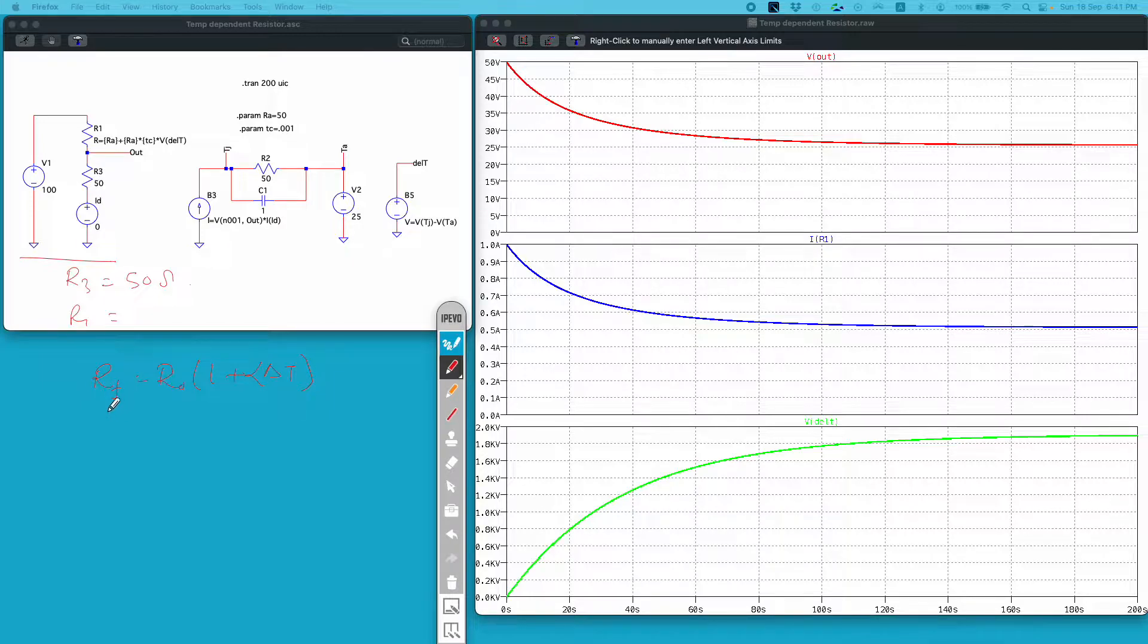Here Rf would be the final value of resistor at the temperature of interest. R naught is the initial value of the resistor at some initial temperature. Alpha is the temperature coefficient and delta T is change in temperature from its initial value.